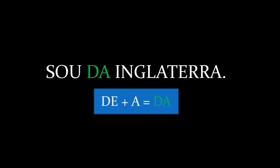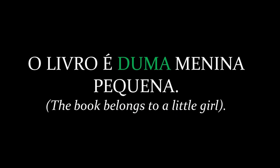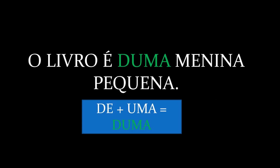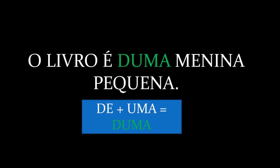Articles can join as well with preposition de, which means 'from' and has a function of complement. For example, sou da Inglaterra — preposition de joins with definite feminine article a and gives da. O livro é duma menina pequena — preposition de joins with article uma and gives duma.